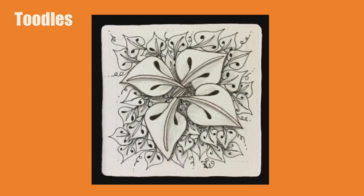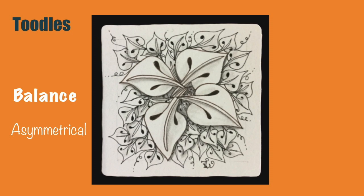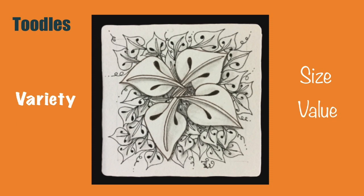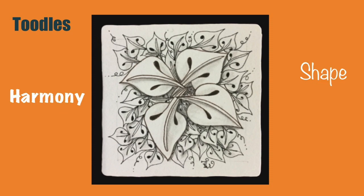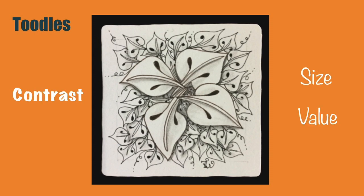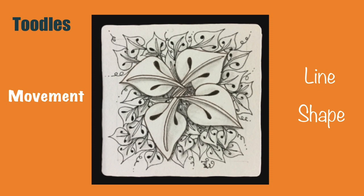Here's another example using Toodles. This tile also has asymmetrical balance, and this was created by a balance of the size and shape of the pattern. To make my tile look more interesting, I've added a variety of sizes and values from light to dark. I've created harmony by using the same shape throughout the tile. The contrast is in the size of the shapes and also in the value of the white against the black. Movement is the way our eyes travel across the tile. I've used lines — the little squiggly lines — and the shape to imply this movement by having them radiate out from the center.